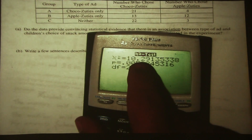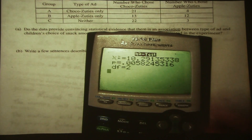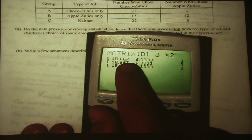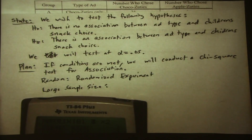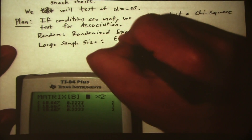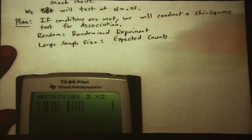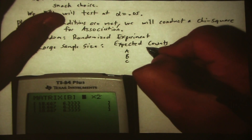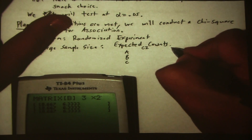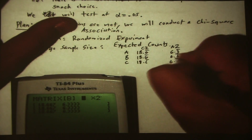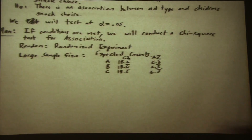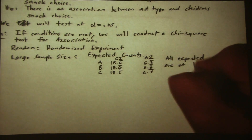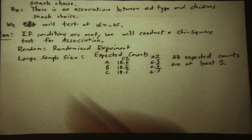Here's actually our chi-square test statistic, our p-value, and our degrees of freedom — we'll get back to those in a minute. Let's go to our expected matrix. Here's what we'd expect. So we have Group A, B, and C, and then those who chose chocolate and those who chose the apples. All expected counts are at least five. So that condition — large sample size — is met.